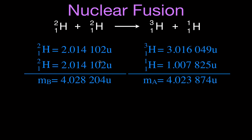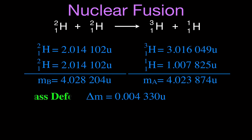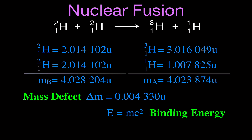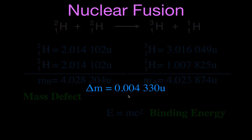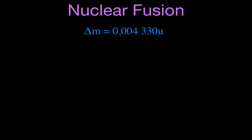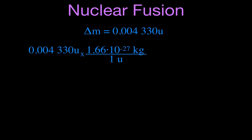Adding the masses on the right-hand side gives 4.023, and when we compare the two sides, there is a small difference. Those numbers are basically close, but not exactly the same — that small difference in mass is the mass defect. Through Einstein's equation, that small mass defect can produce a significant amount of energy — the energy that powers our sun and all the stars. So here is the mass defect.